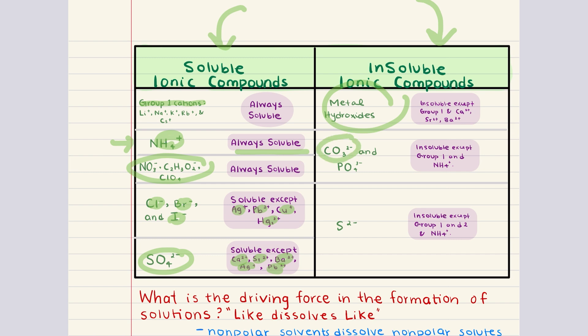In addition to that, carbonate and phosphate, insoluble, except when they're paired with a group one cation, or ammonium.